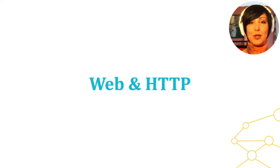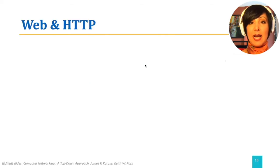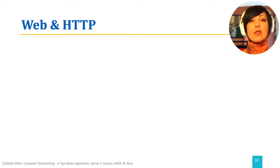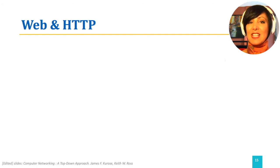The first application layer protocol we will discuss is the Hypertext Transfer Protocol, the HTTP protocol, for web applications. One of the early applications of the internet that got public attention was the web. This probably was due to its on-demand nature, as opposed to the scheduled broadcast nature of other media such as radio and television.